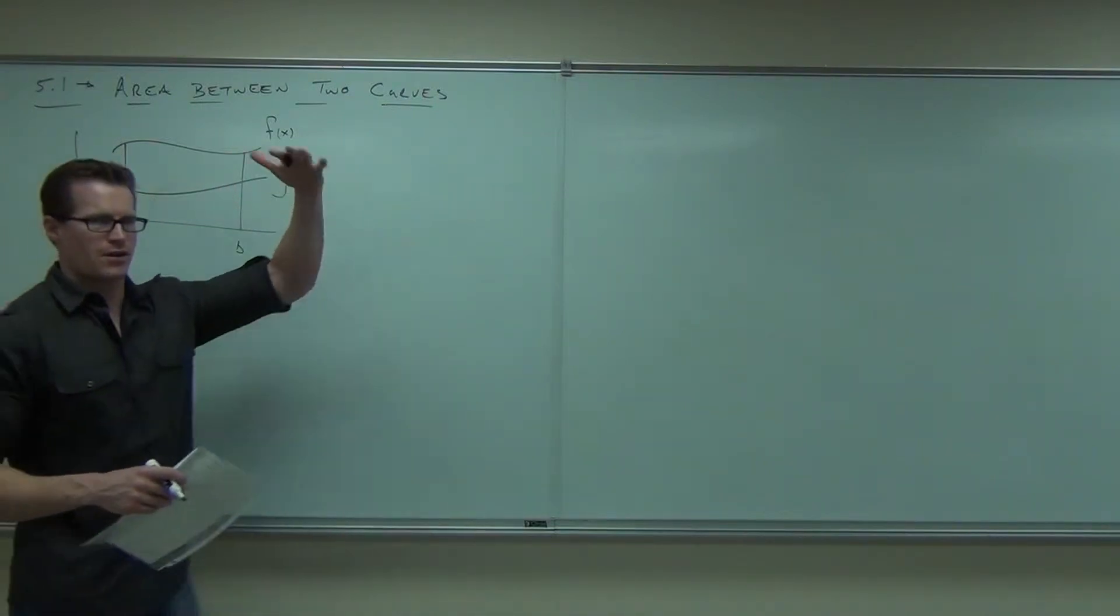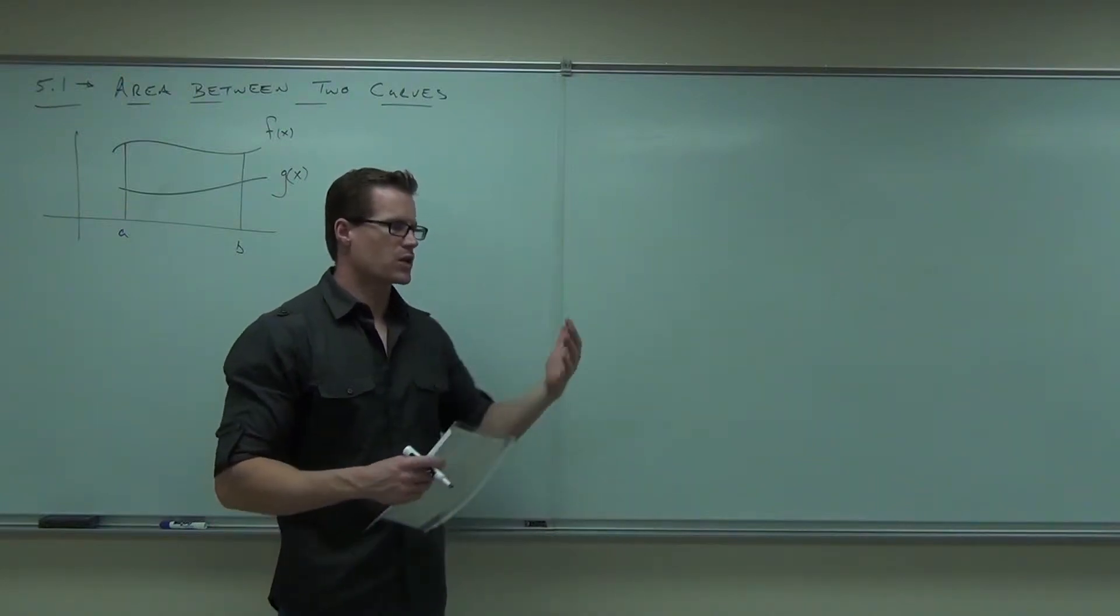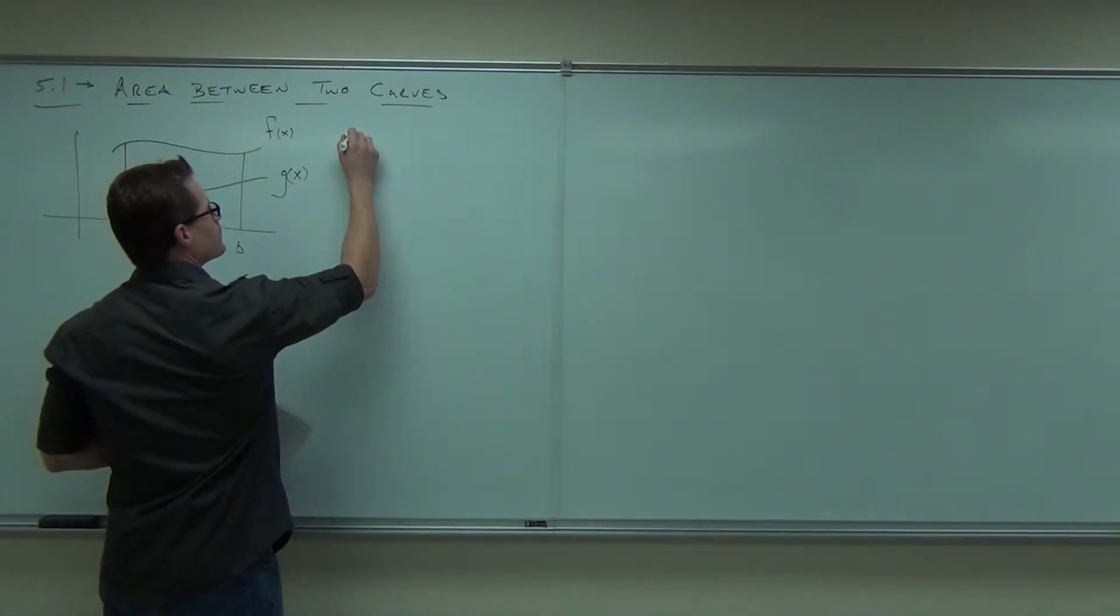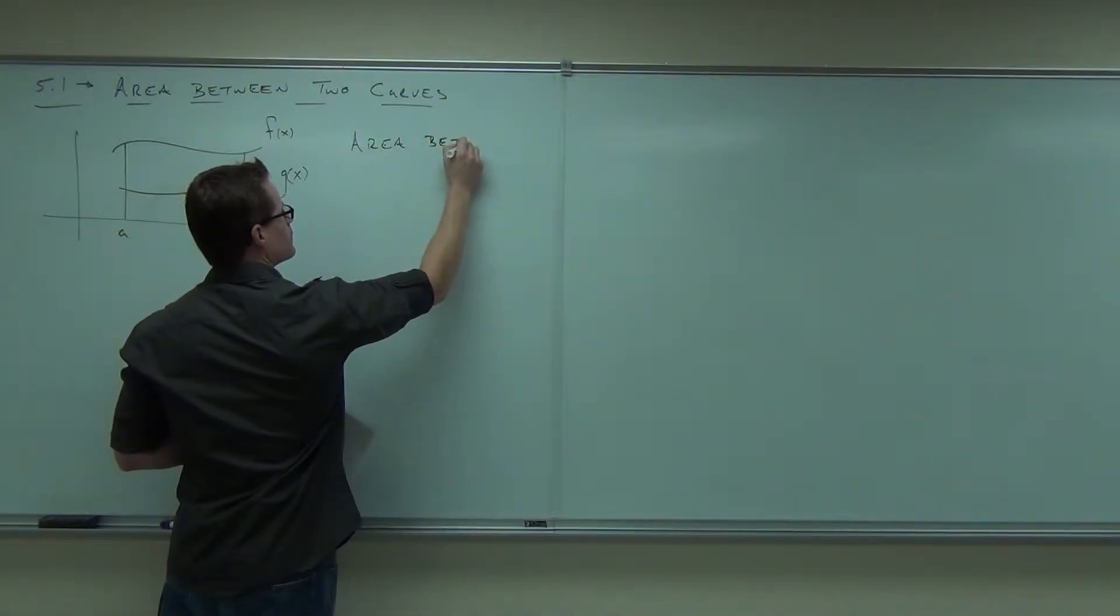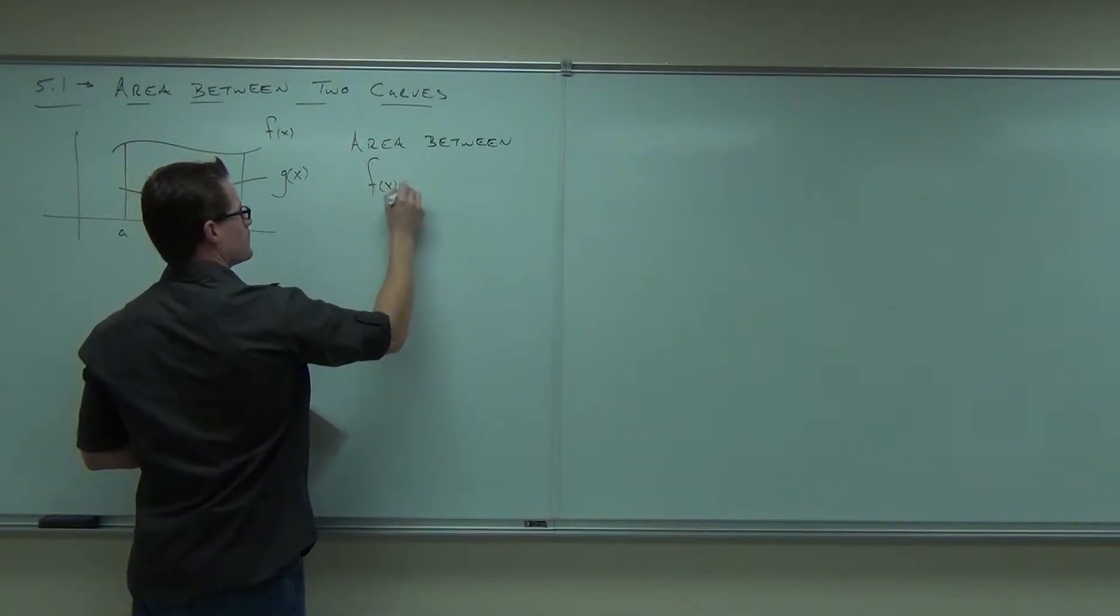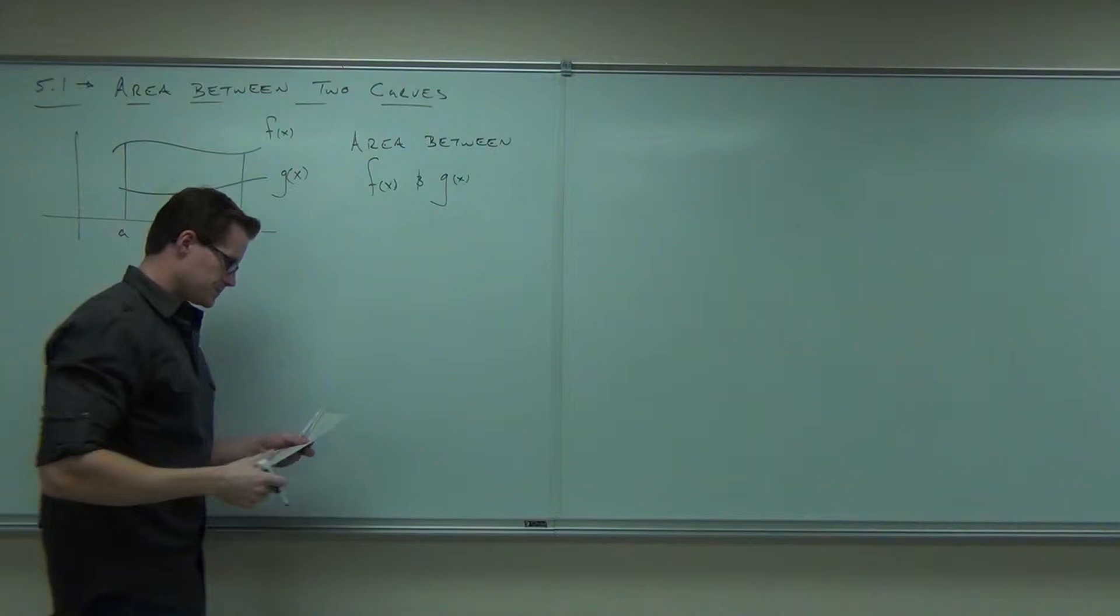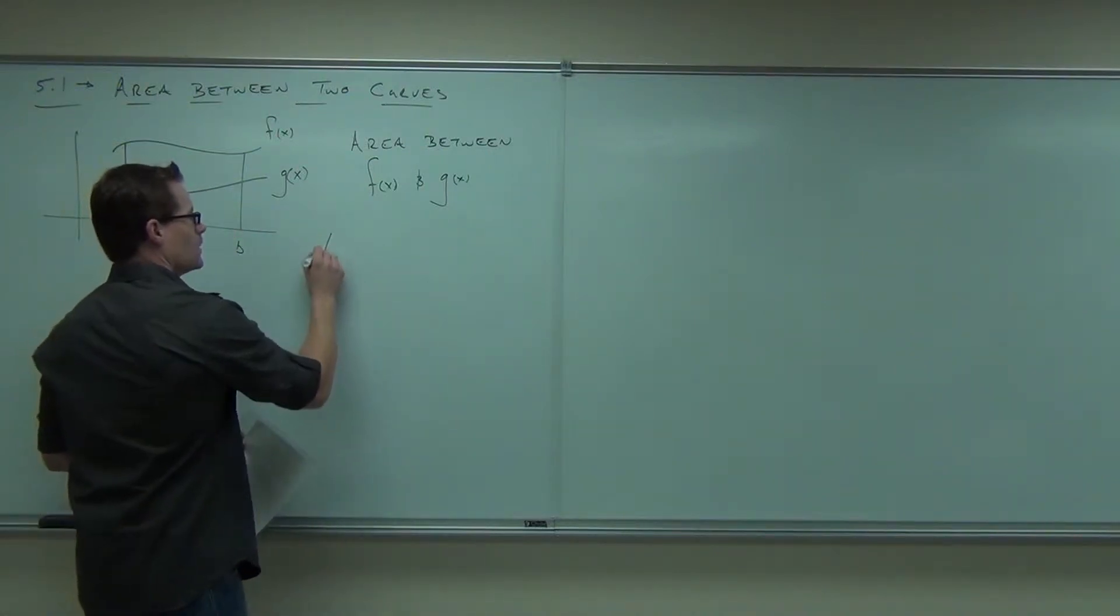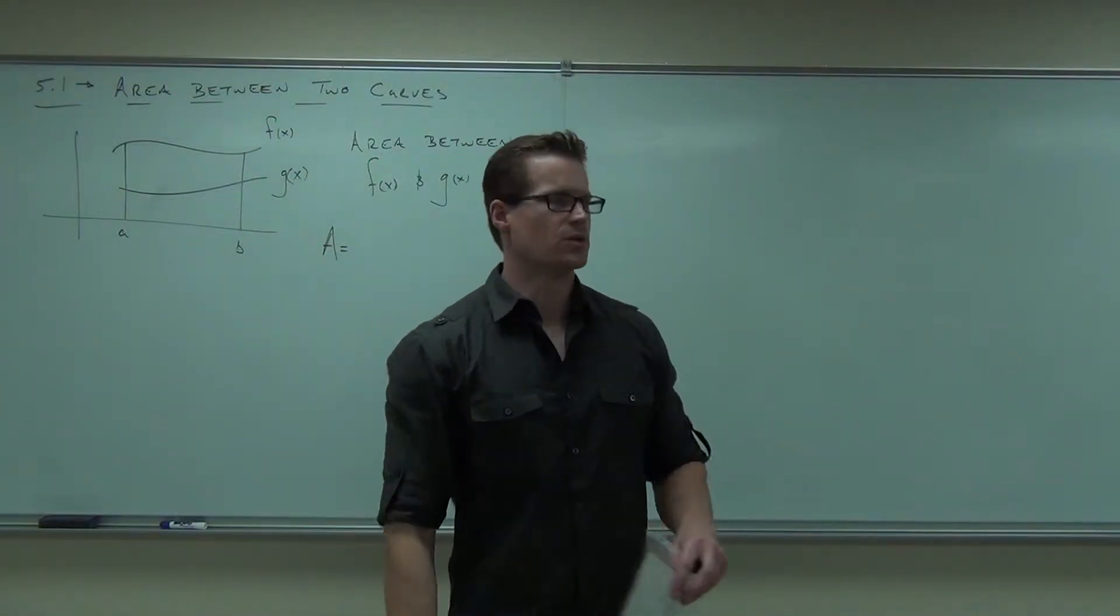You see, we already know how to find the area under f of x, right? And we know how to find the area under g of x. We're talking about the area between them. How would you go about doing that? Give me some ideas. What would you do?